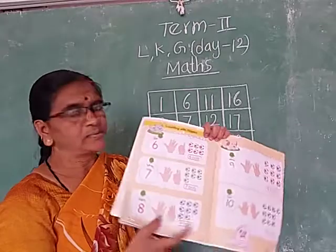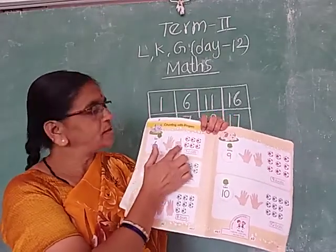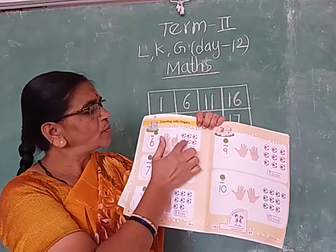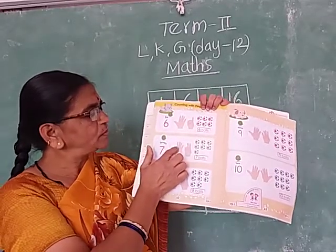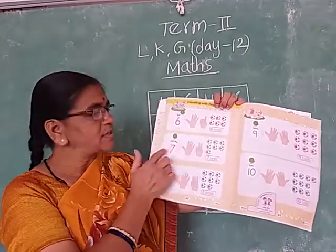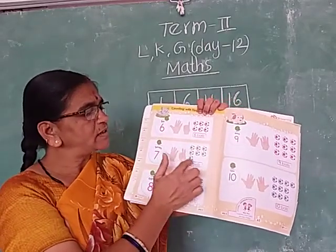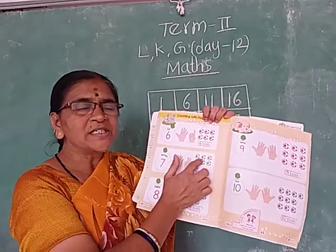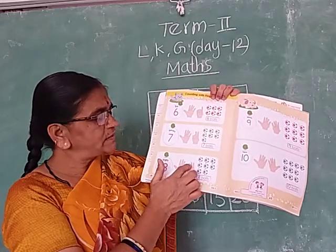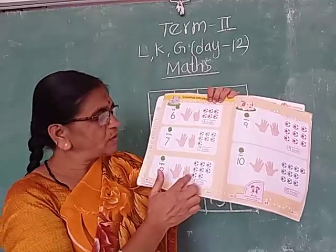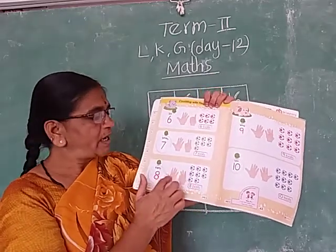Count with fingers now. 1, 2, 3, 4, 5, 6 — 6 fingers. 1, 2, 3, 4, 5, 6 — 6 balls. Next number 7. 1, 2, 3, 4, 5, 6, 7 — 7 fingers. 1, 2, 3, 4, 5, 6, 7 — 7 balls. How many balls are there? 7. Next number 8. 1, 2, 3, 4, 5, 6, 7, 8 — 8 fingers. Count the balls: 1, 2, 3, 4, 5, 6, 7, 8 — 8 balls.